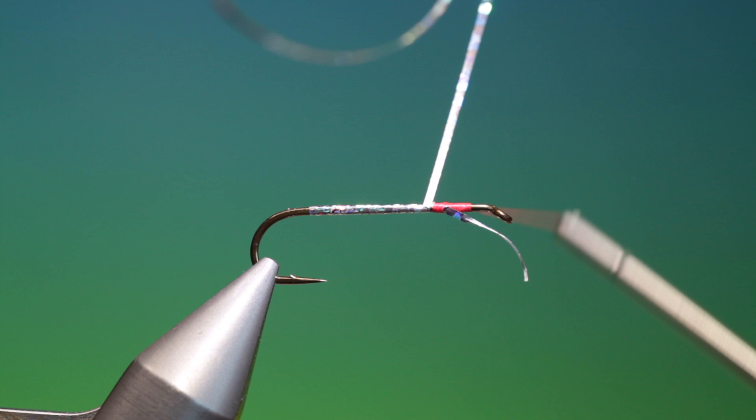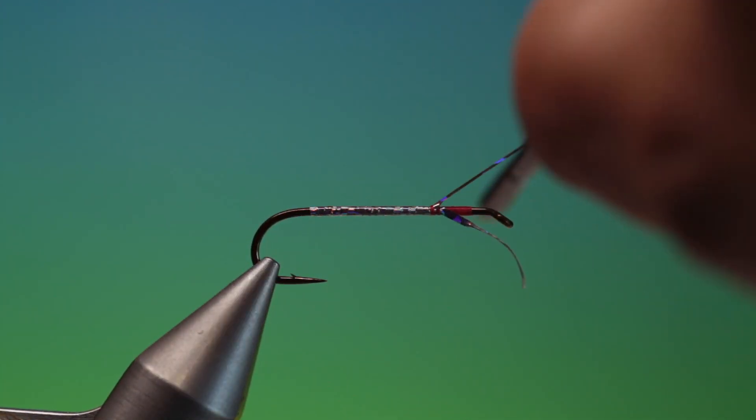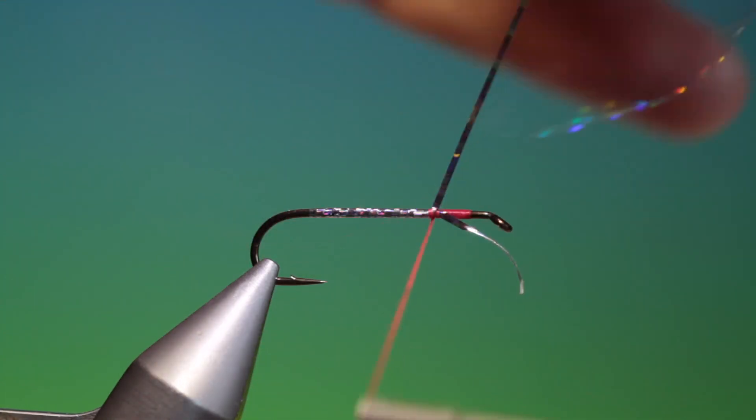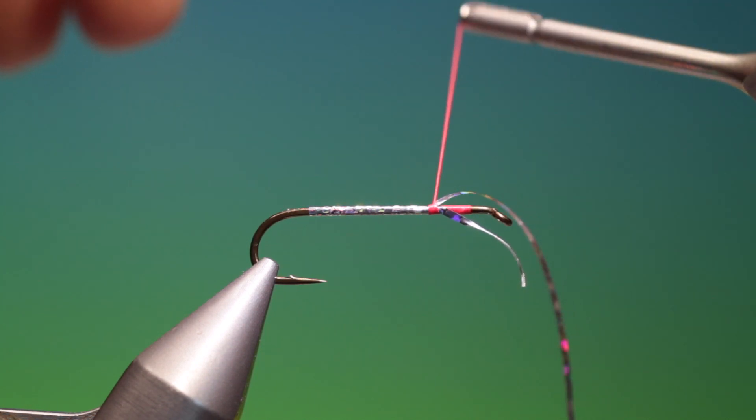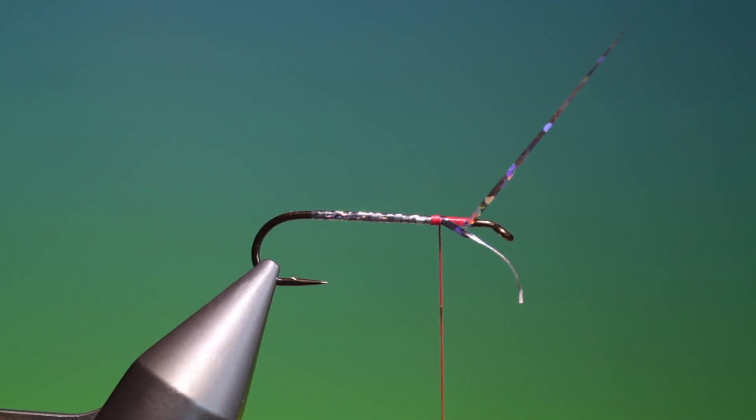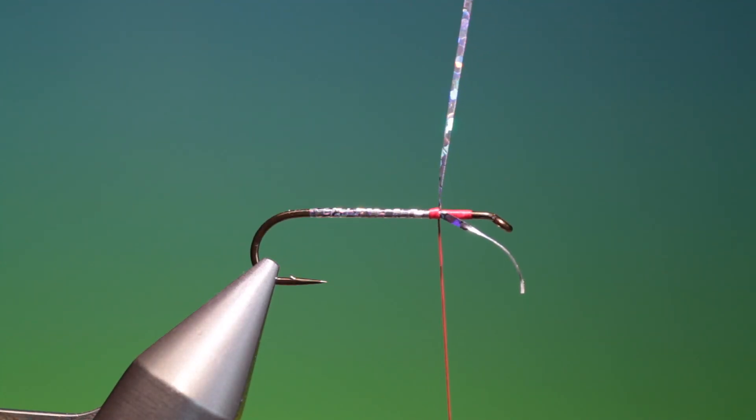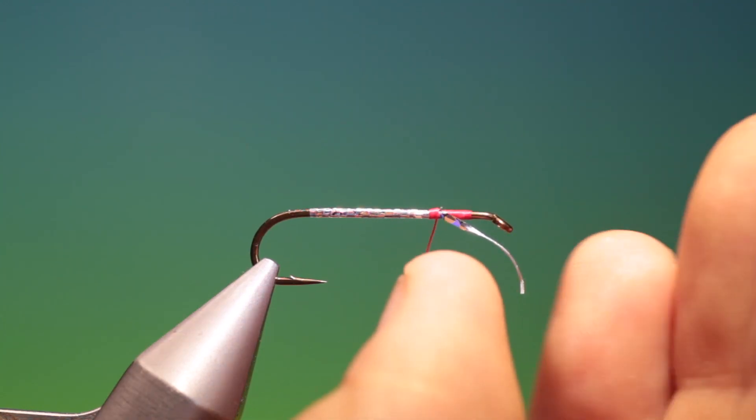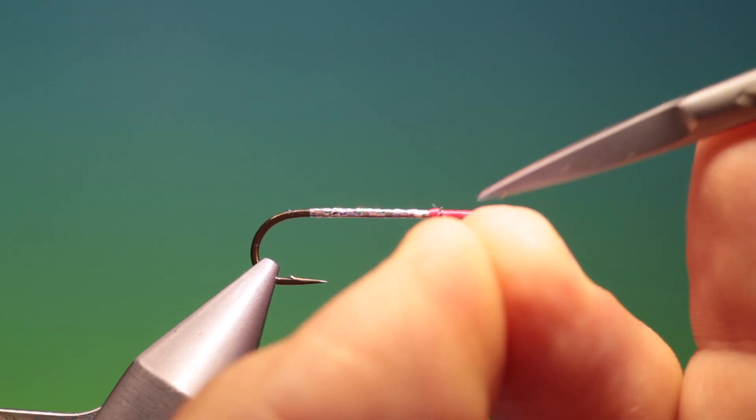We go back into here and then I can wrap back. Tie that off. Two or three turns and do this there. And then we can remove both that and that.